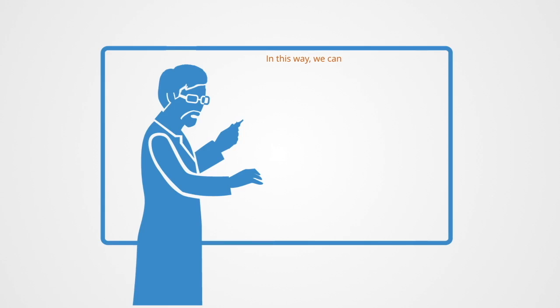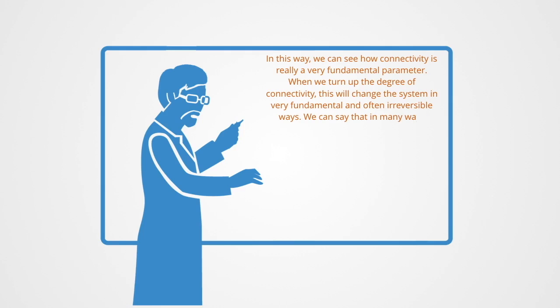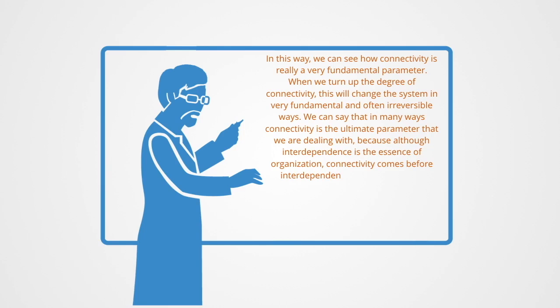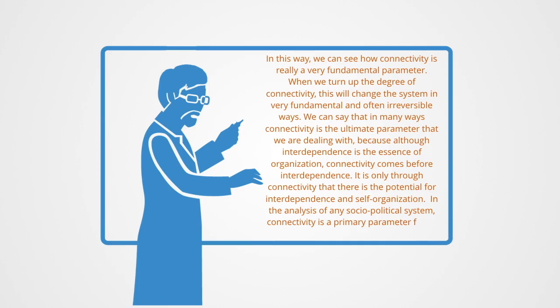In this way, we can see how connectivity is really a very fundamental parameter. When we turn up the degree of connectivity, this will change the system in very fundamental and often irreversible ways. Connectivity is the ultimate parameter because although interdependence is the essence of organization, connectivity comes before interdependence. It is only through connectivity that there is the potential for interdependence and self-organization. In the analysis of any socio-political system, connectivity is a primary parameter to first identify and analyze.